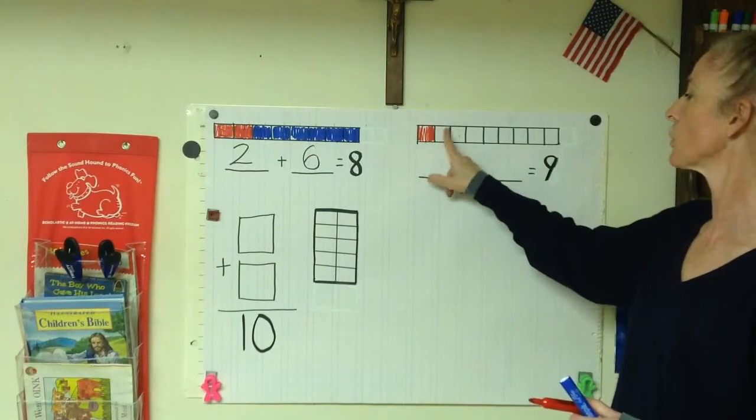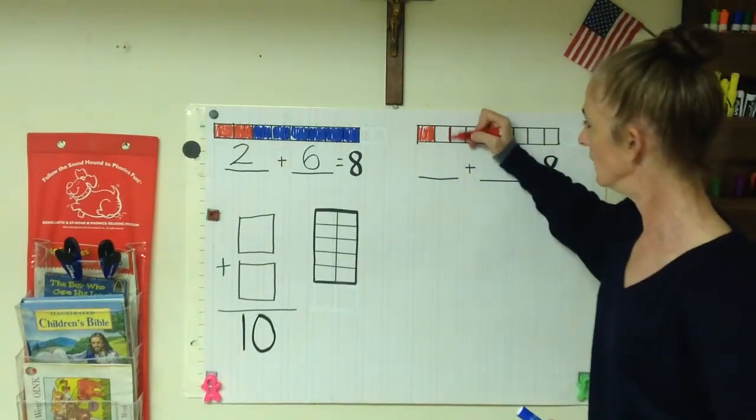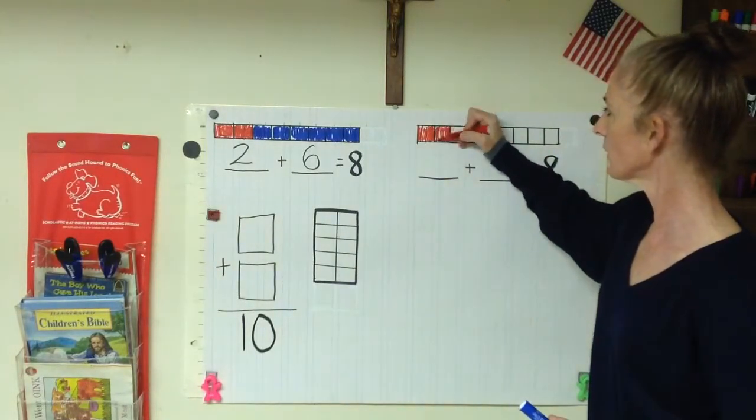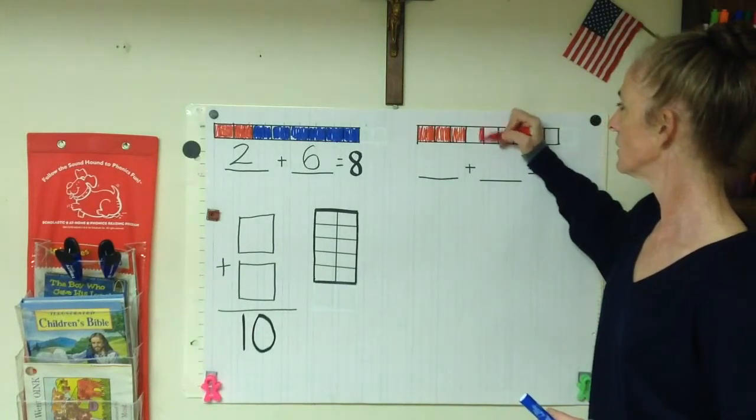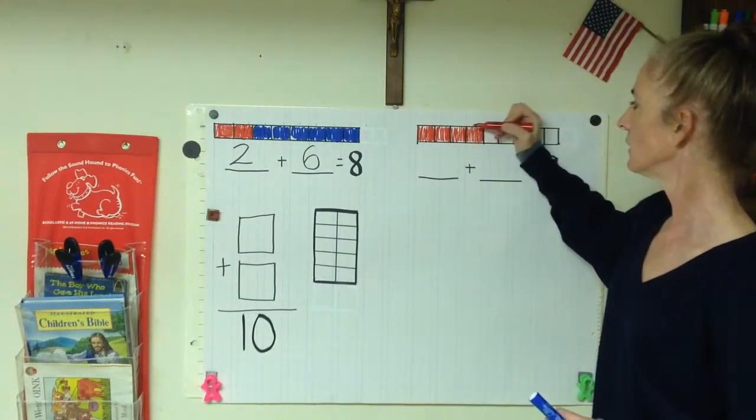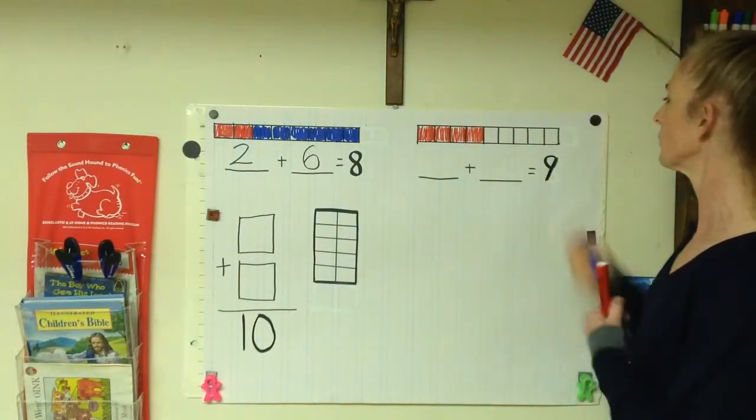We should check and make sure there are nine boxes to make sure our sum will be nine. Let's check. One, two, three, four, five, six, seven, eight, nine. Okay. So I will color in... one, two, three, four in red. I'm going to color the rest in blue.